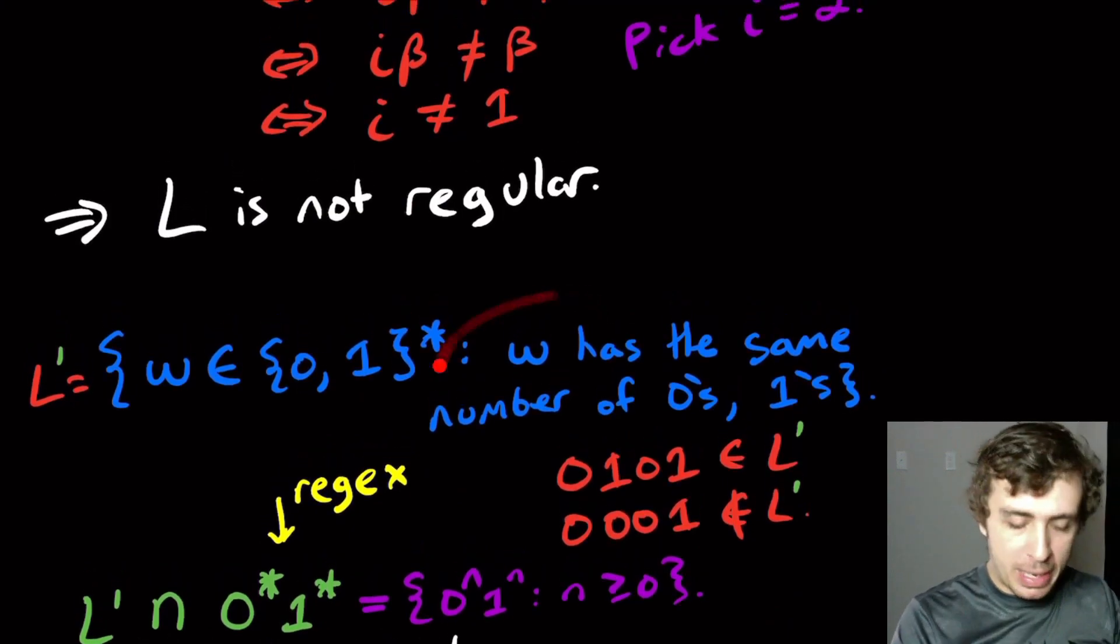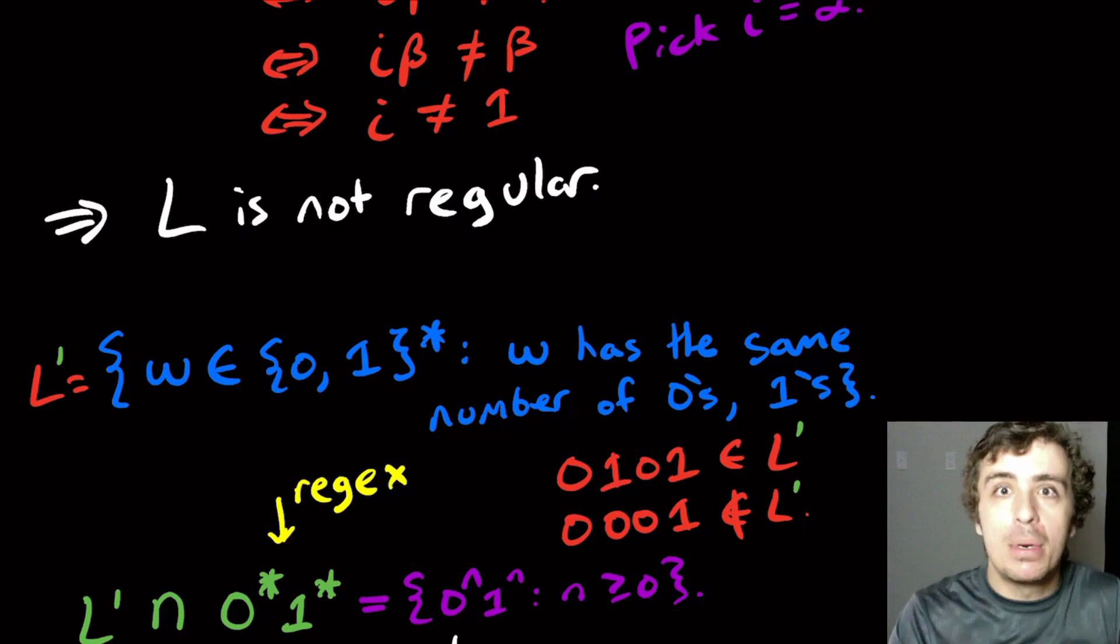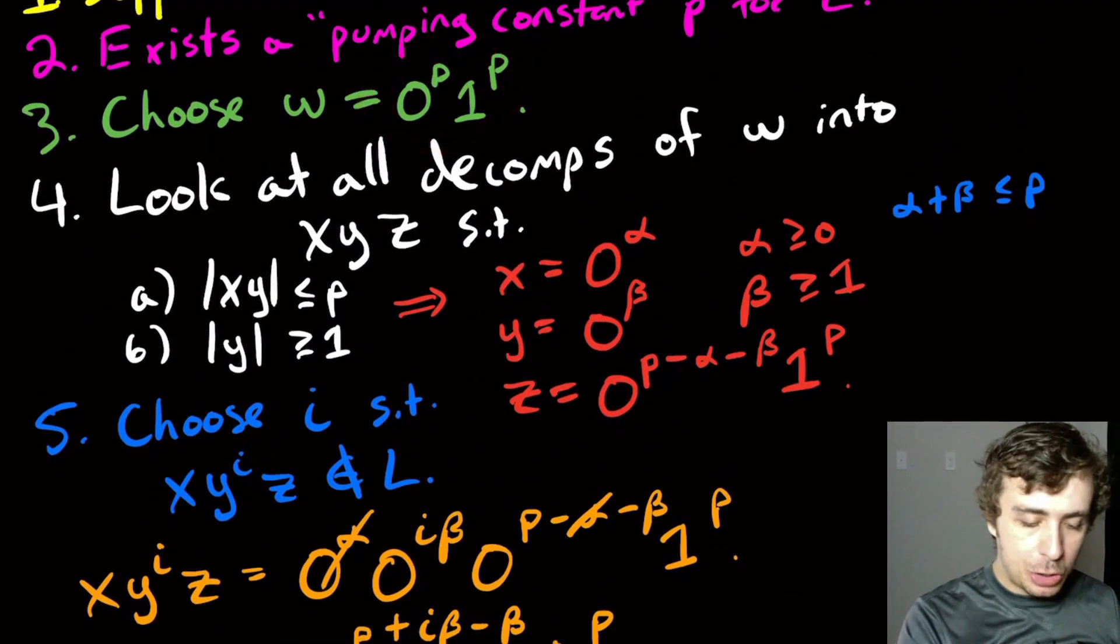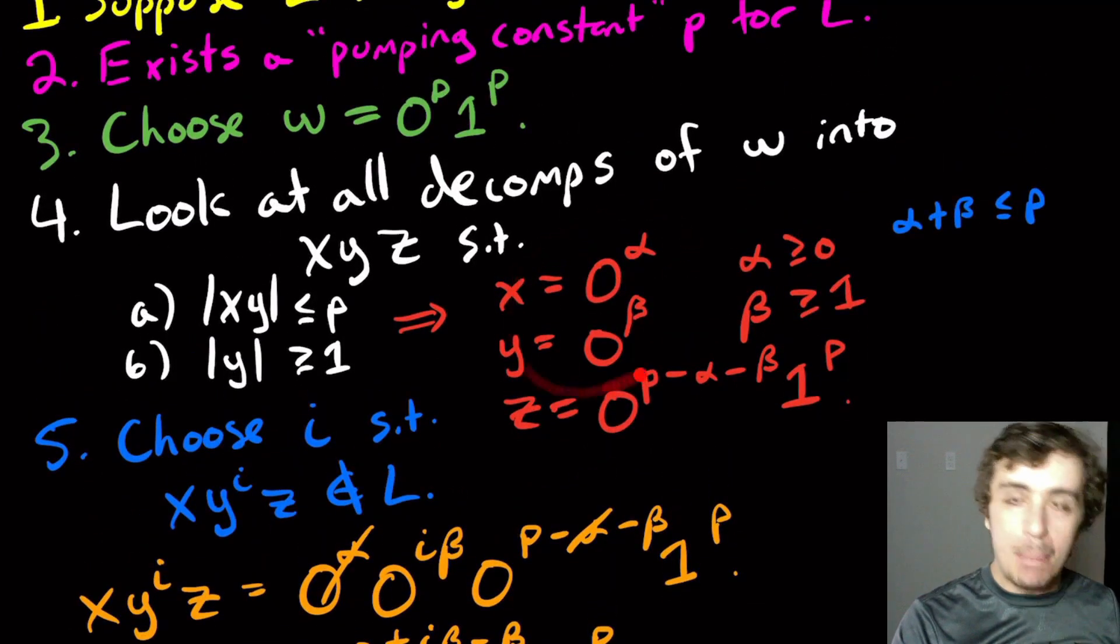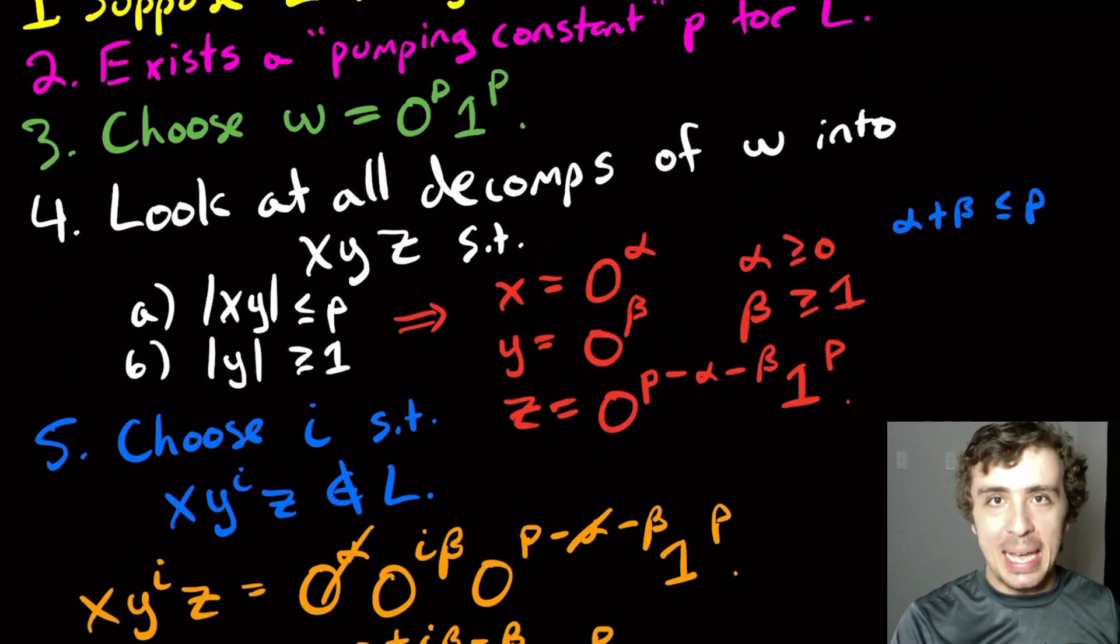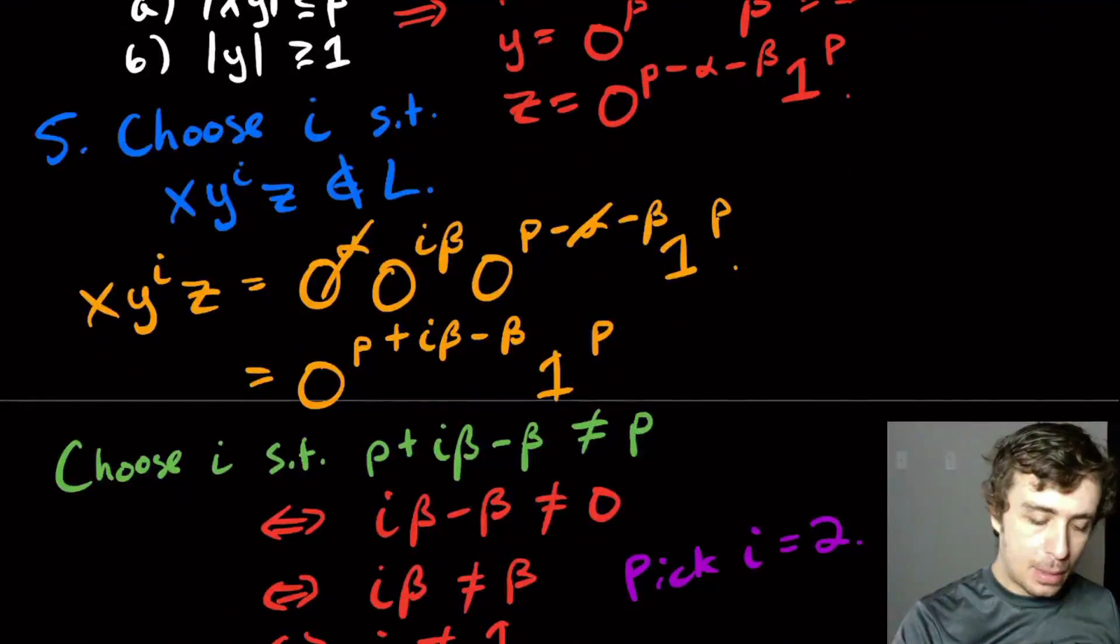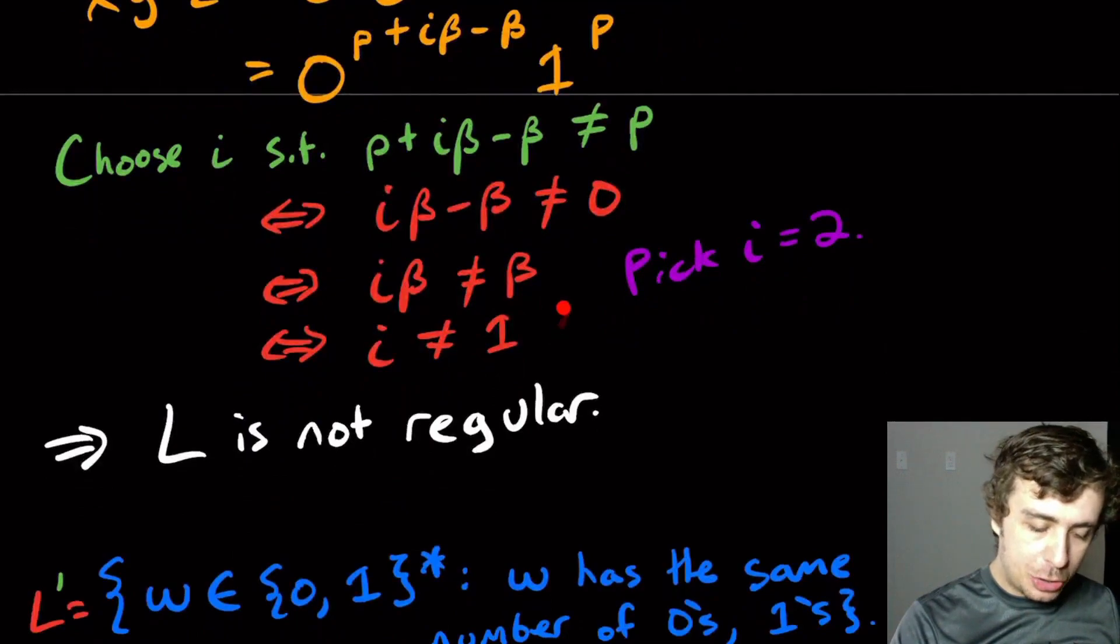We don't enforce any ordering here. So as long as it has the same number, that's all we care about. So here, it's the same string, therefore all of the decompositions are exactly the same. So this is exactly the same. Well, then, if we look at the resulting string, which is this one right here,